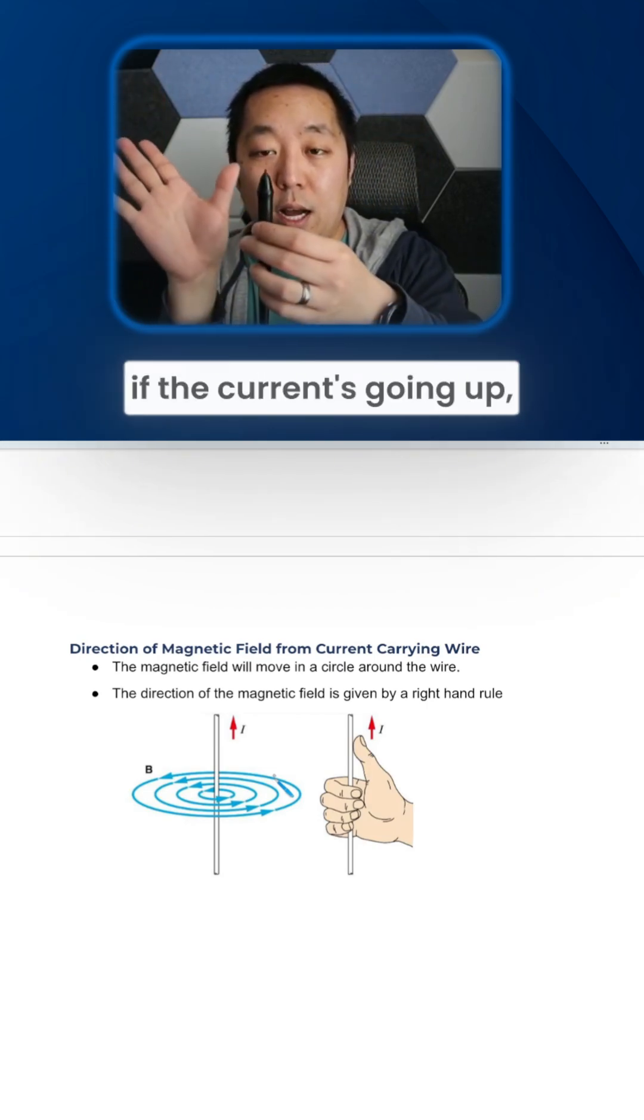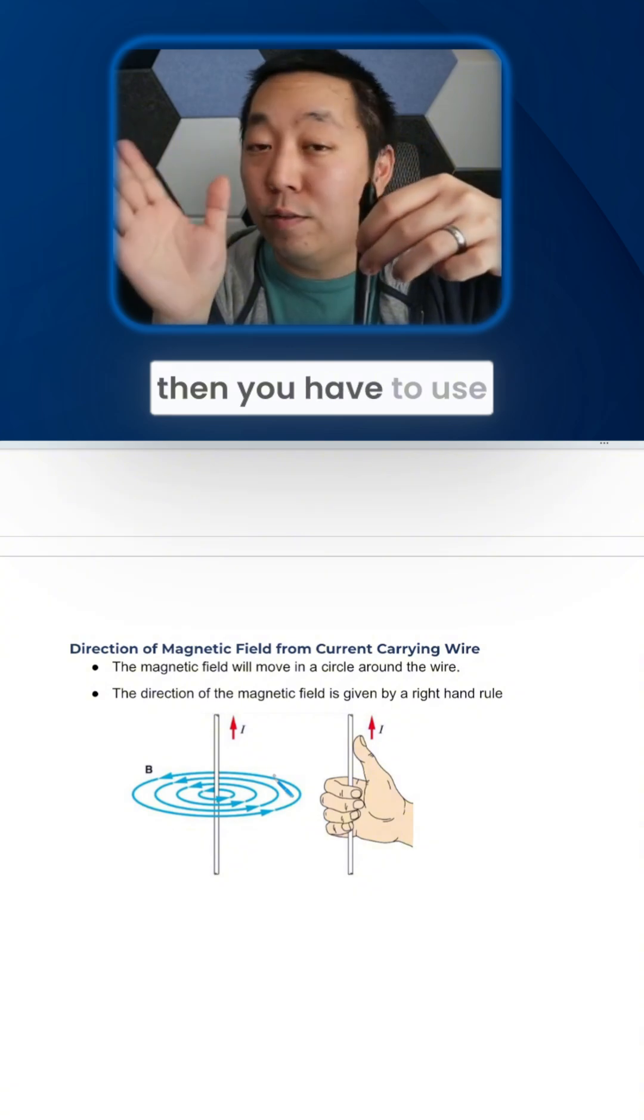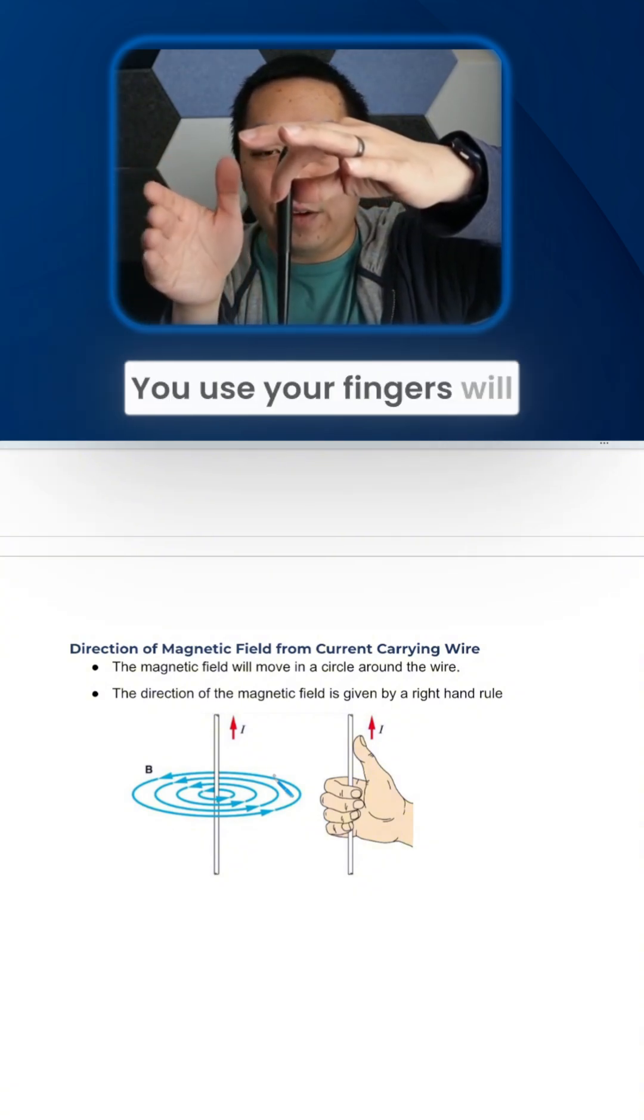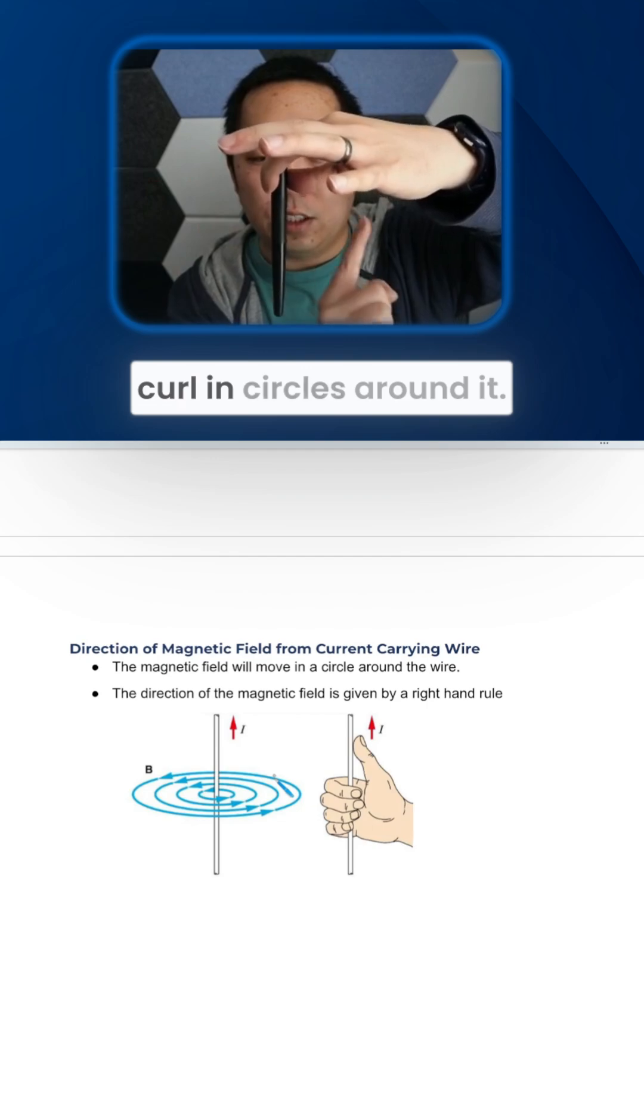So in this case, if the current's going up, then you have to use your right hand. That's why it's called a right-hand rule. You use your fingers will curl in circles around it.